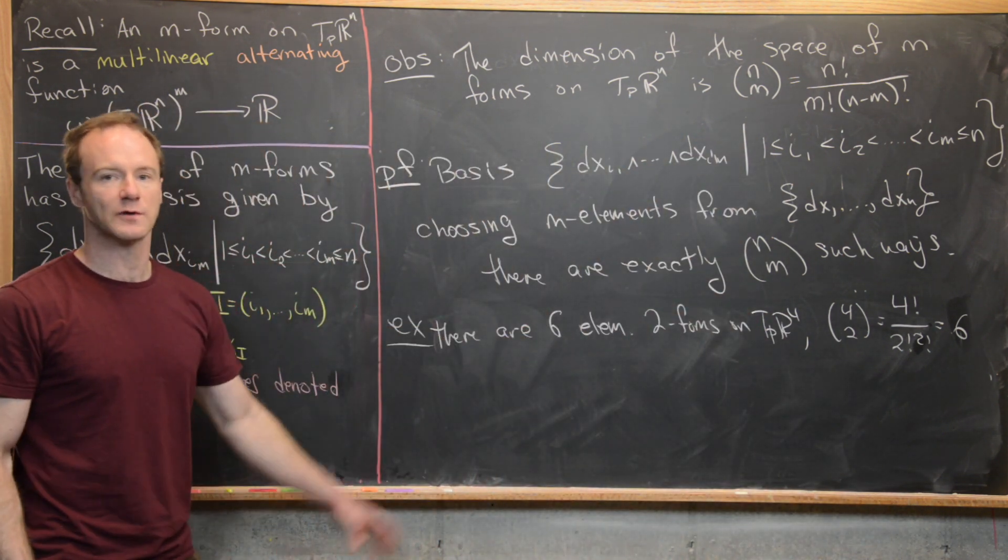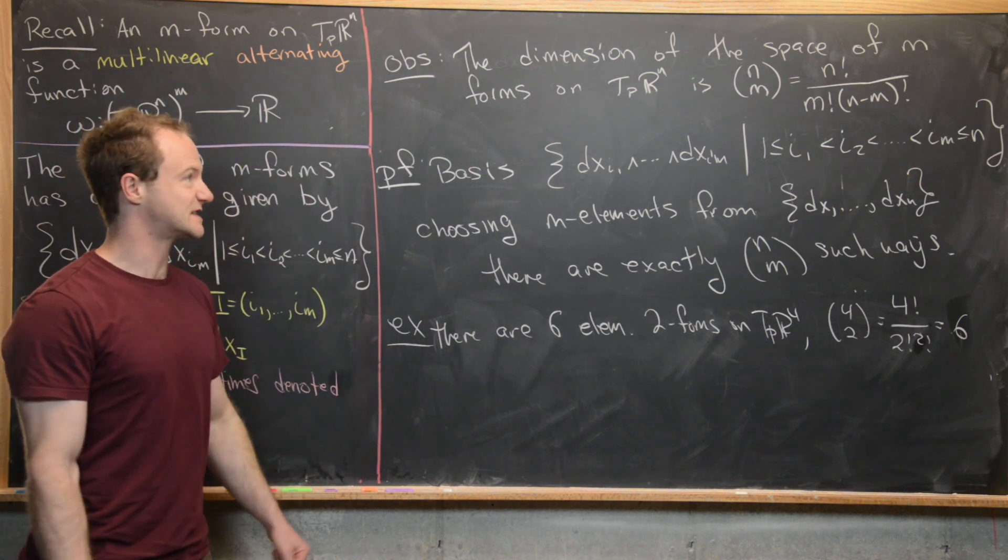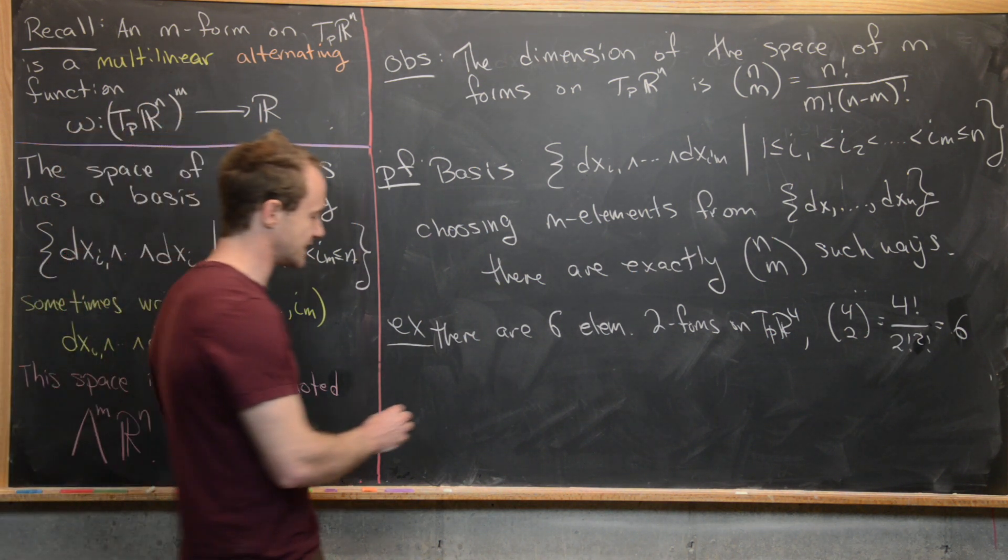And I said elementary 2 forms. Those elementary 2 forms form the basis. So in other words, the space of 2 forms on TPR^4 is 6 dimensional. Now let's see if we can list them.